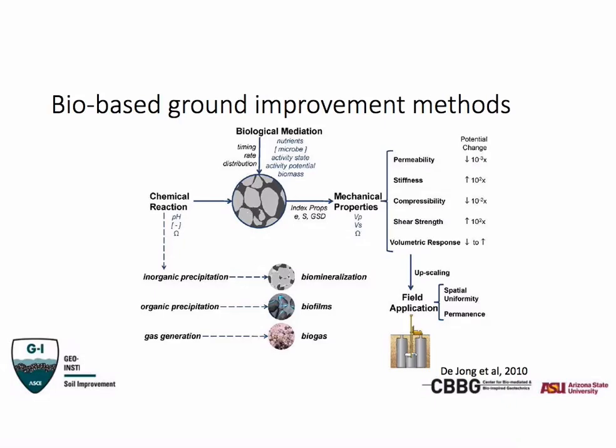One group is Jason Deong's group at UC Davis, which came up with a nice overview of what we can try to achieve using bio-mediated processes. Typically, biology just catalyzes a chemical reaction that transforms solute compounds into solid compounds. Those solid compounds can be used to either reduce permeability, increase stiffness, reduce compressibility, increase shear strength, or modify the dilatancy of the material — depending on the objective of your process.